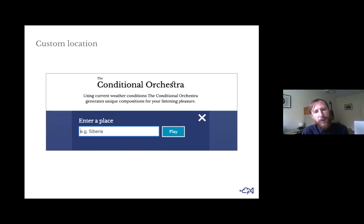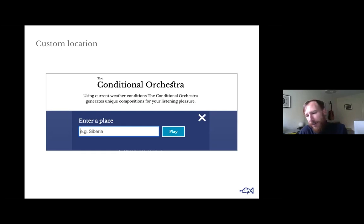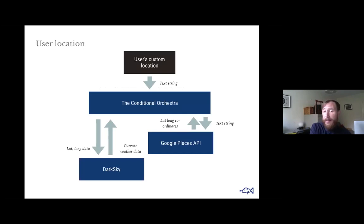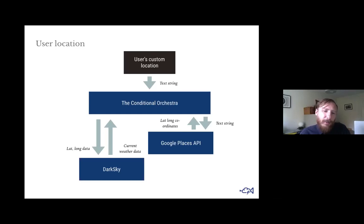That allows me to output the place name and a pretty-looking map in the user interface, and generate the music from the weather data. I also added a second option so people could explore the whole world — entering a custom location. I steer people towards Siberia because it produces some of the most interesting music in my opinion. I actually use a different tuning system for places that are bitterly cold to evoke the weather. In that flow, the user enters a text string, and the Google Places API gets the lat/long coordinates from that place name.